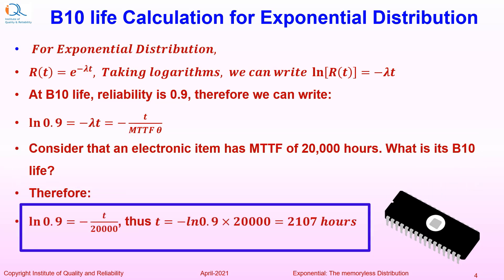Therefore, ln of 0.9 equals minus t upon 20,000, and therefore t can be solved as minus ln 0.9 times 20,000, which equals 2107 hours.